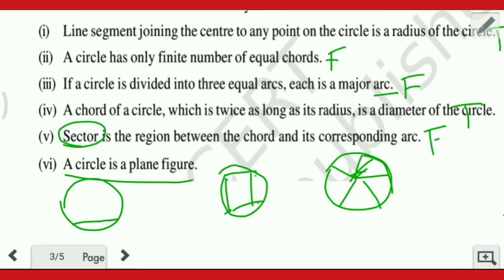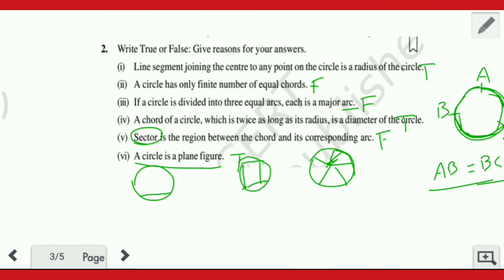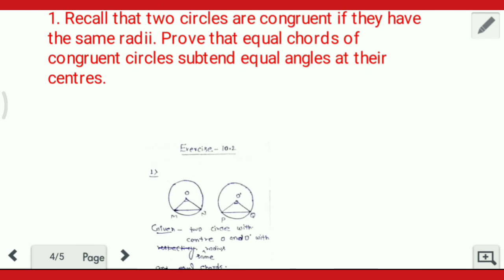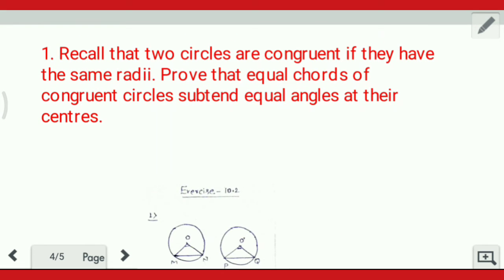Next: a circle is a plane figure — this is TRUE. Because circle hamaara two-dimensional figure hota hai. So if a circle is a two-dimensional figure, it is a plane figure.